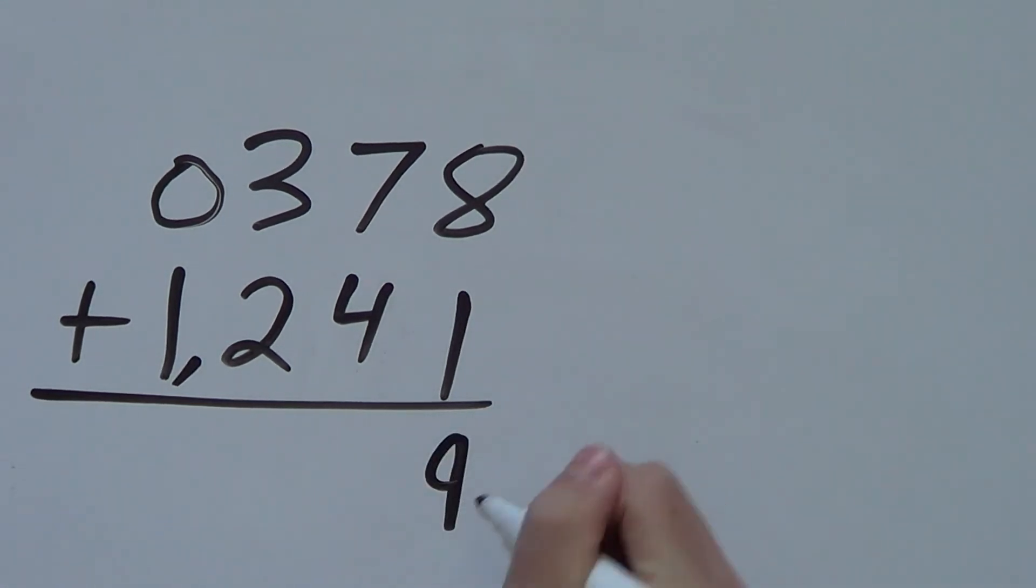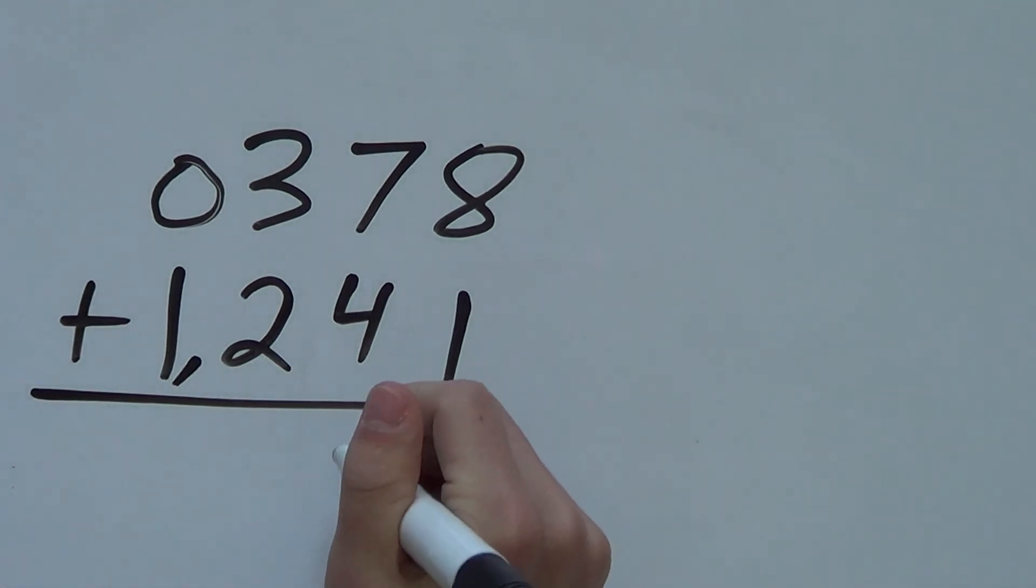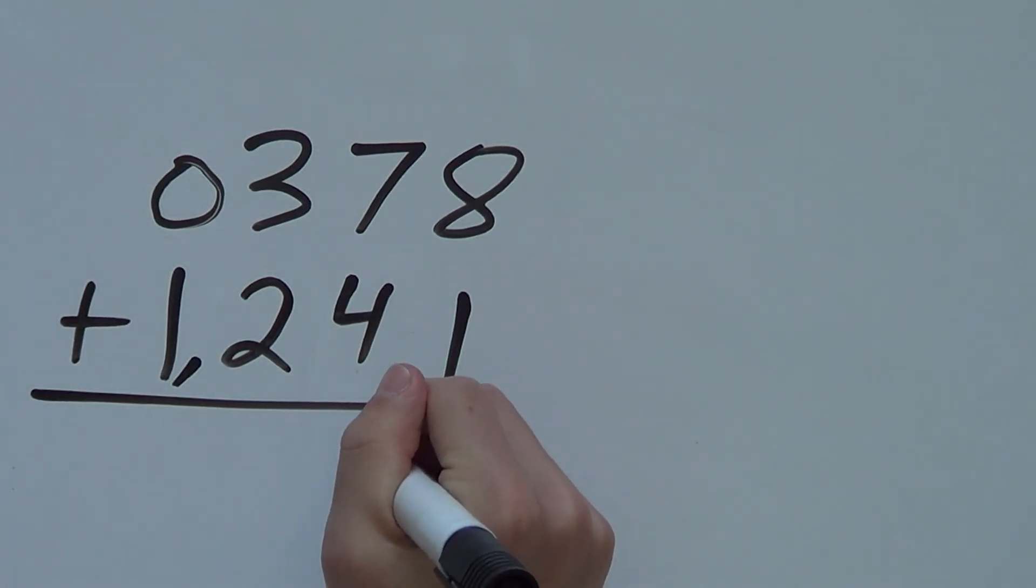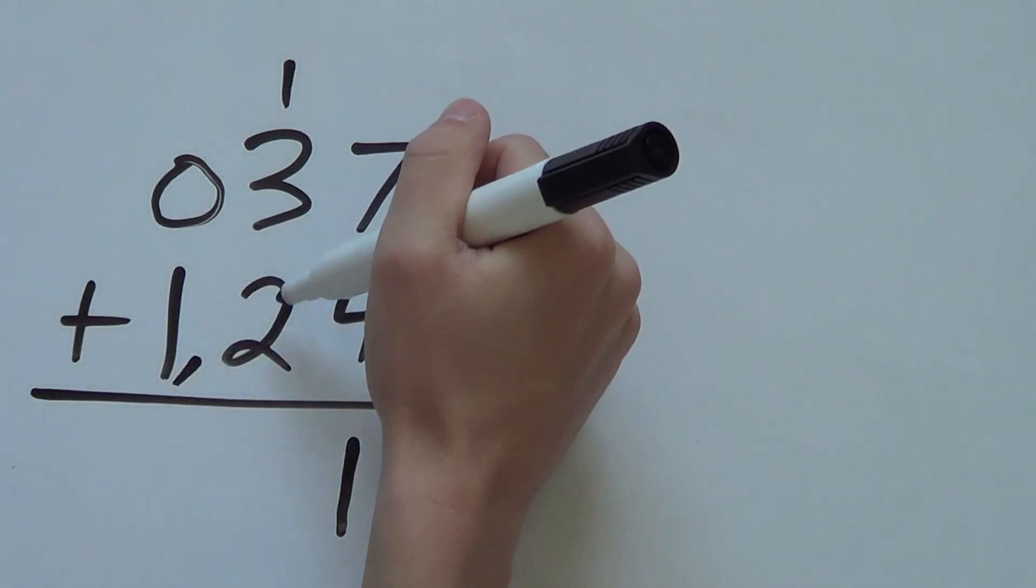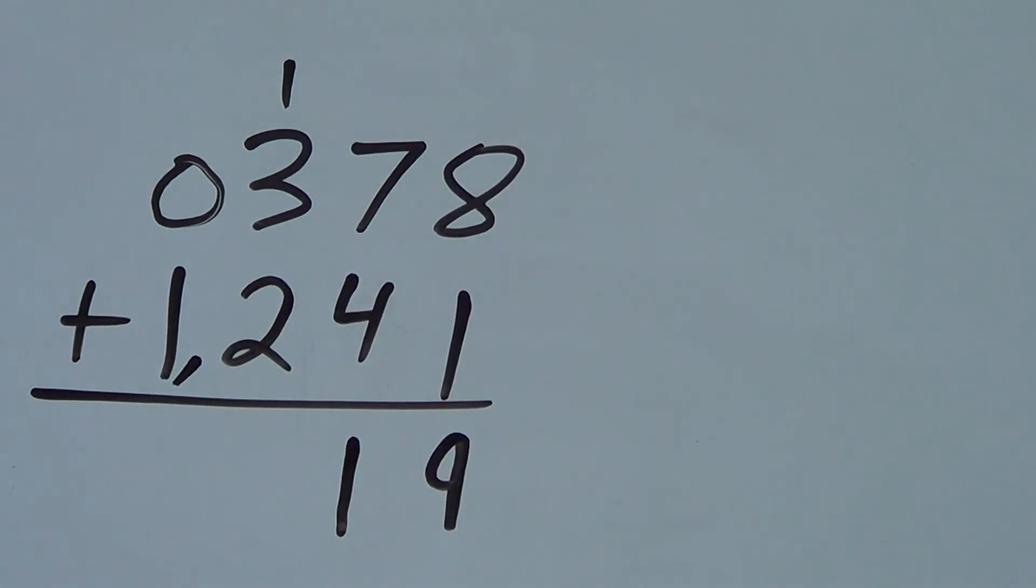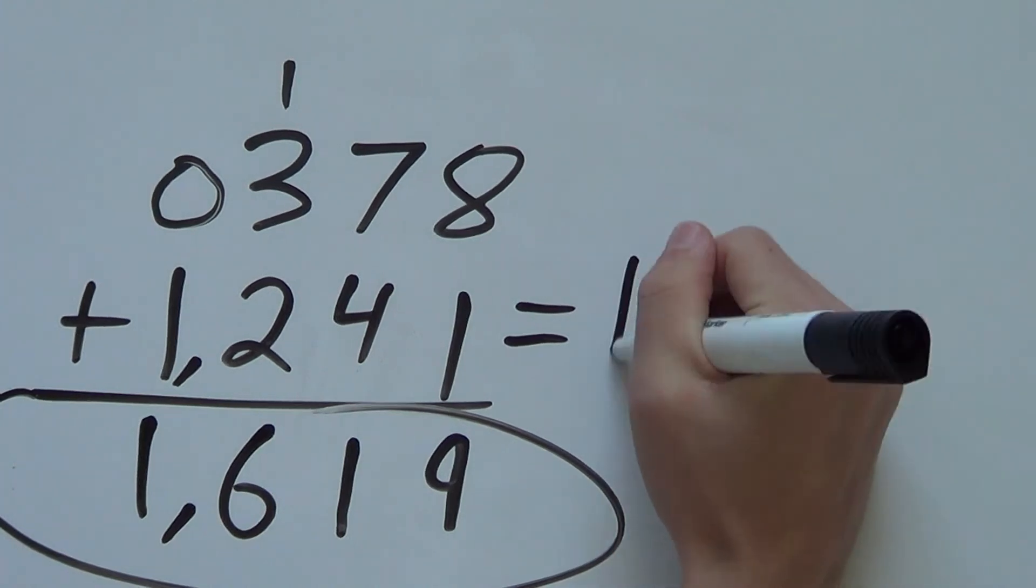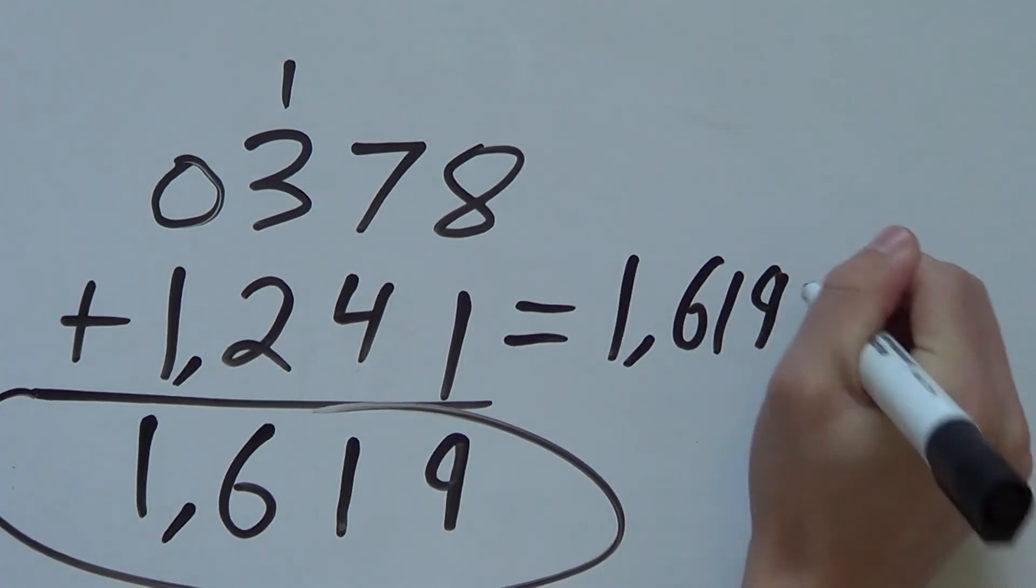So 8 plus 1. We get 9, 7 plus 4. That's 11. So 1 comes down. And we carry the 1 up to the top. 11. Now we have 3 plus 2 and the 1. So that's 6. And then we have 1 by itself. Or you can go 1 plus 0. And that's 1. So the answer is 1,619.